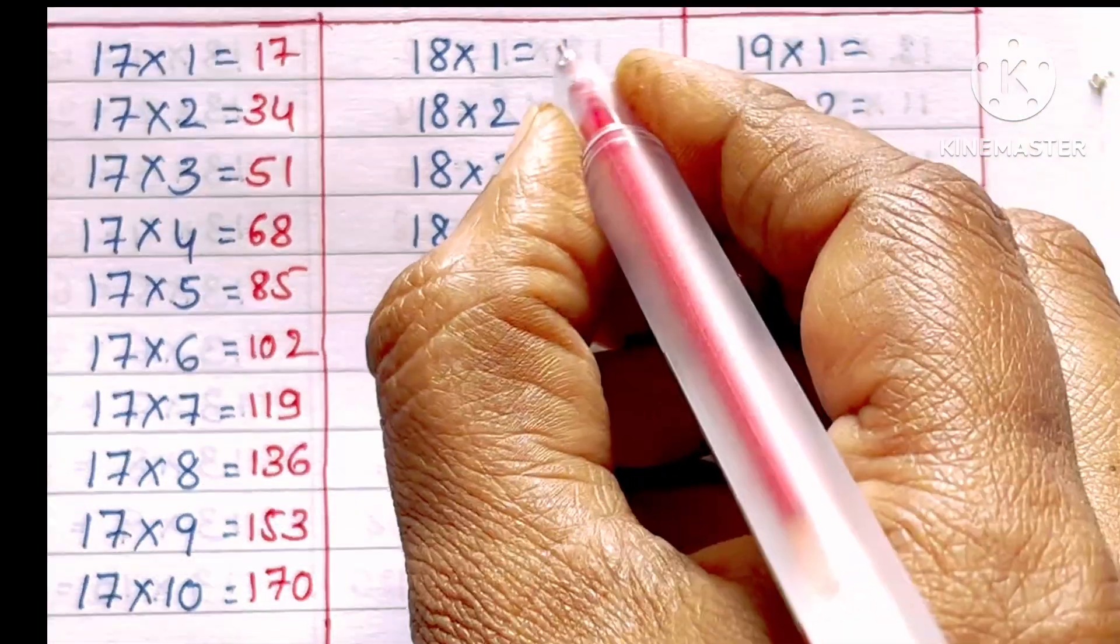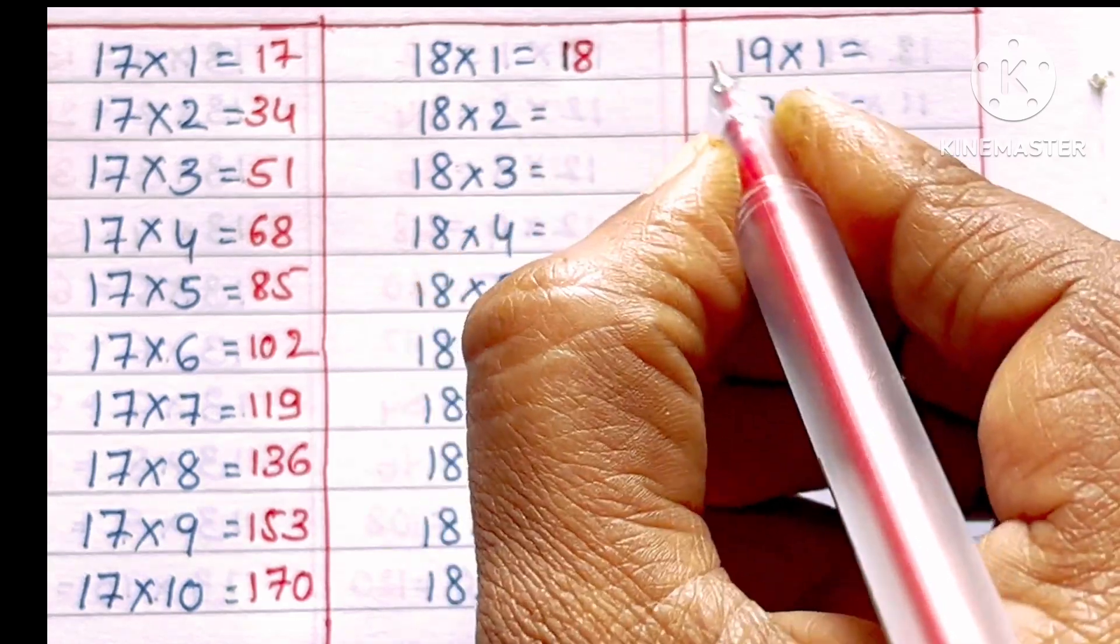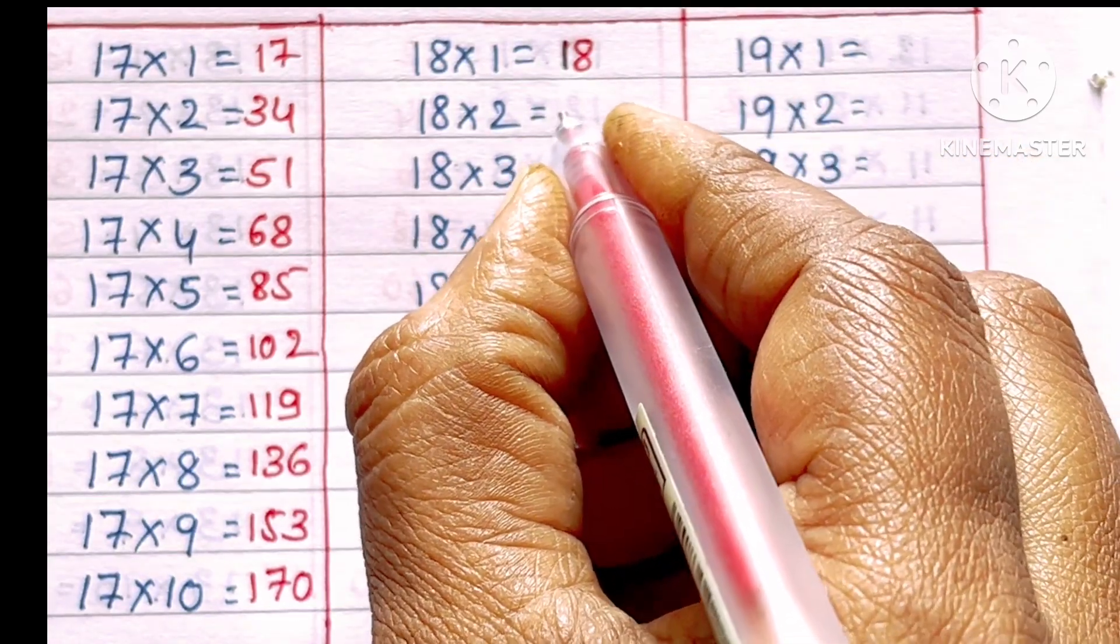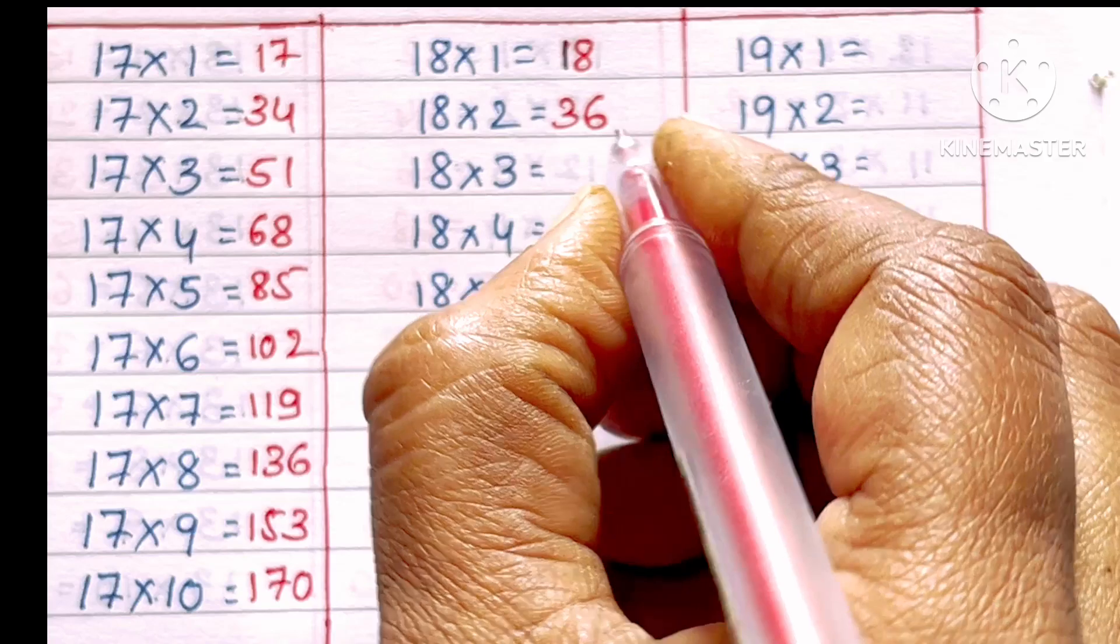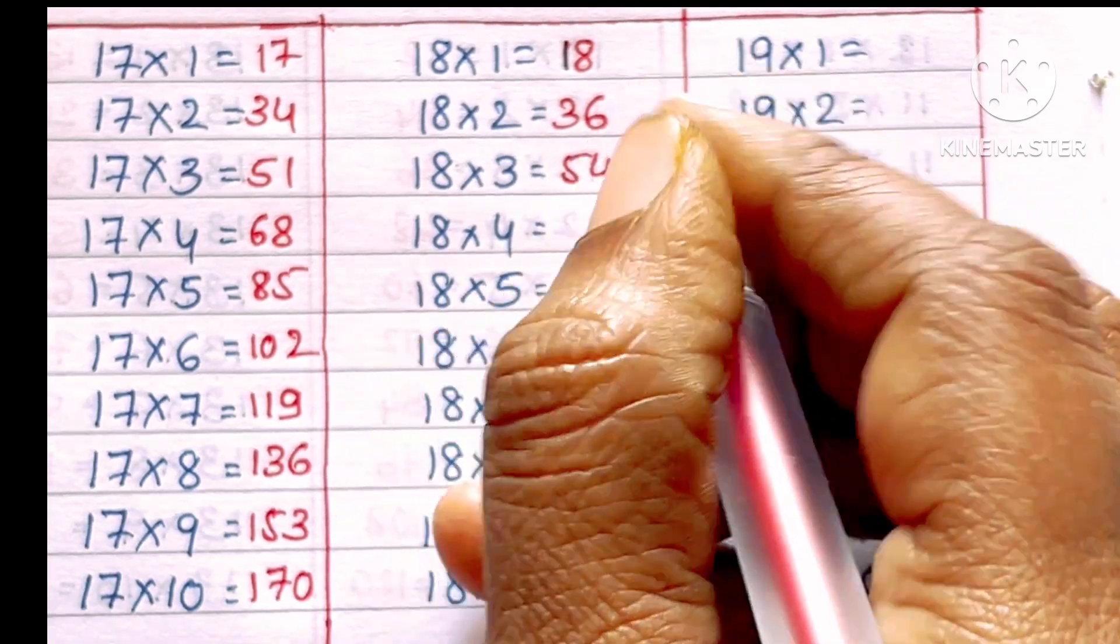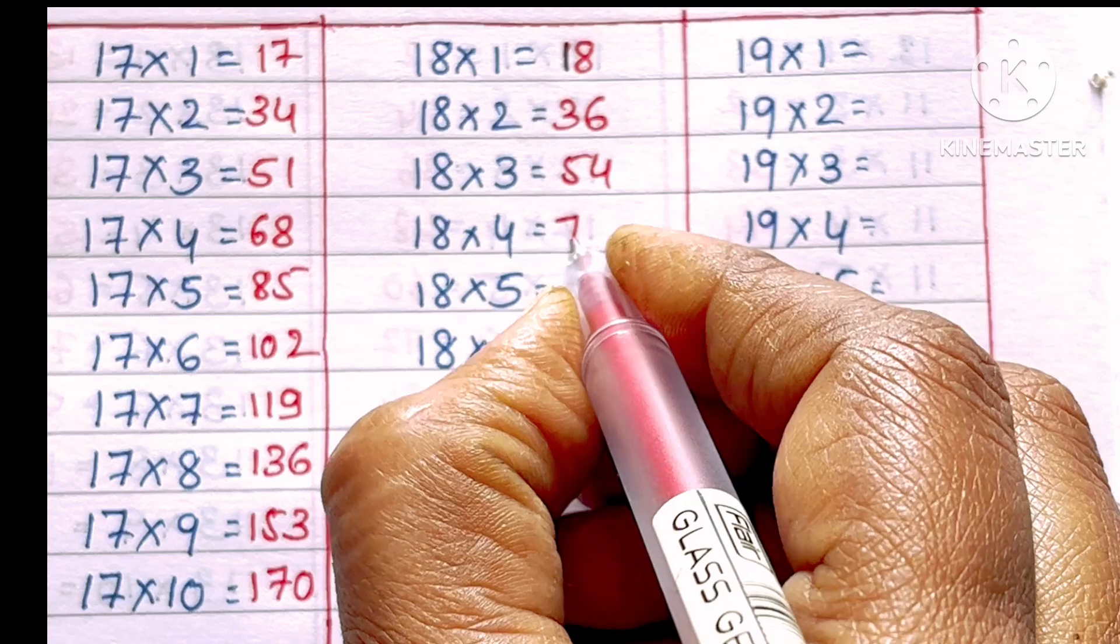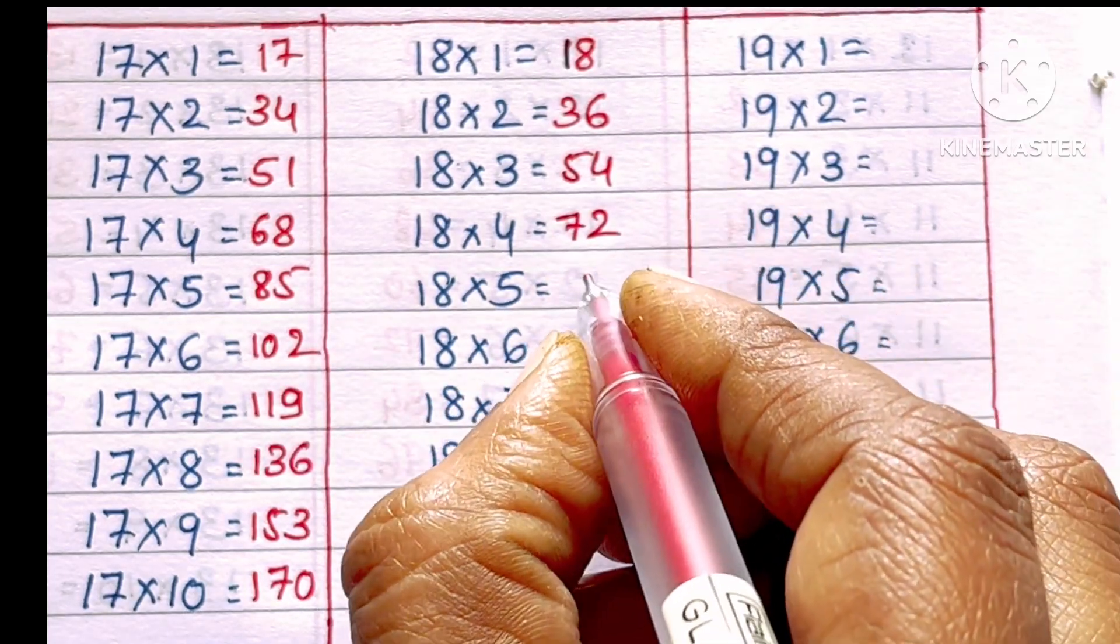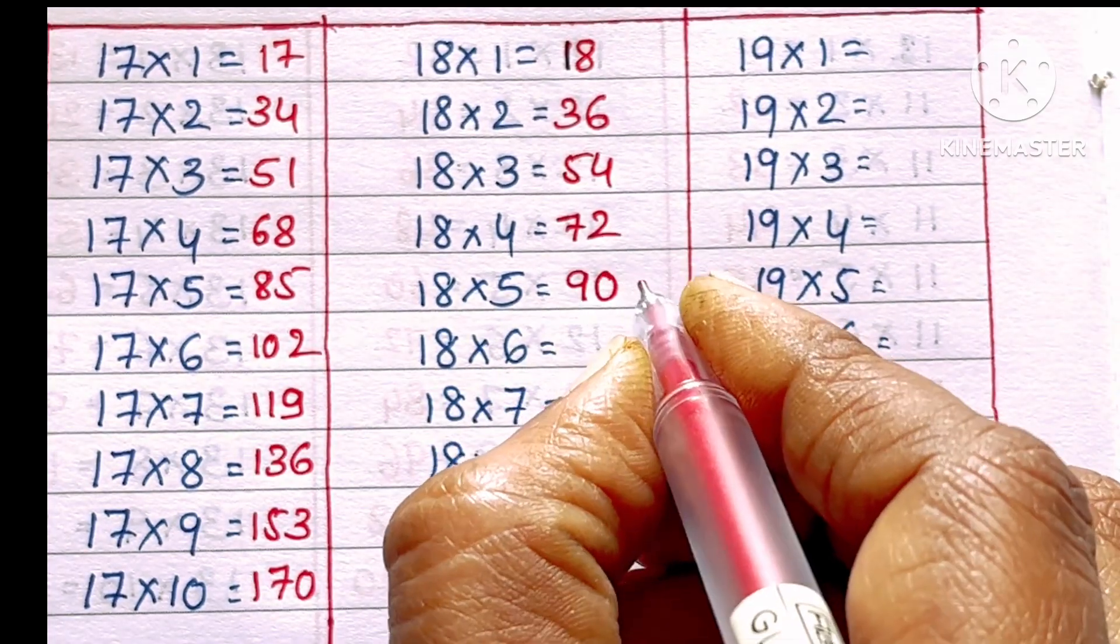18 ones are 18, 18 twos are 36, 18 threes are 54, 18 fours are 72, 18 fives are 90.